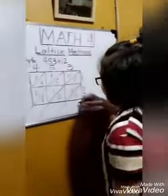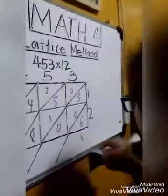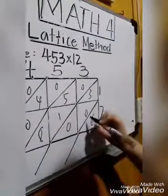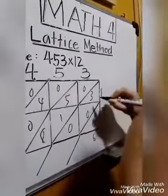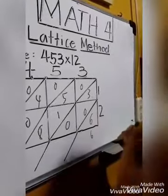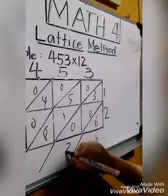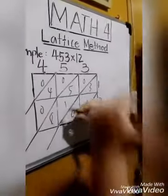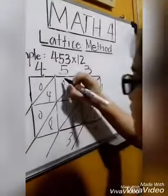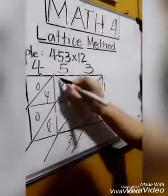After multiplication, add 6. Drag down 6. 0 plus 3 equals 3. 3 plus 0 equals 3. 8 plus 5 equals 13. Plus 1 equals 14.